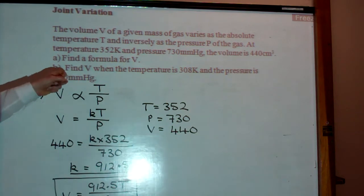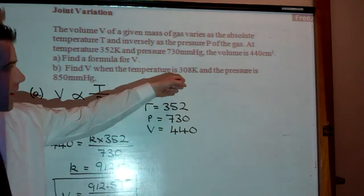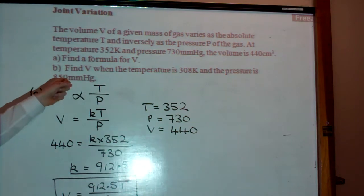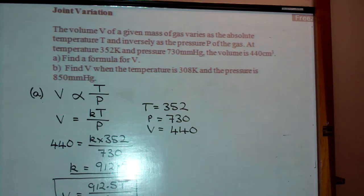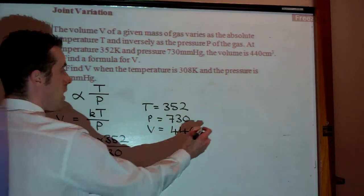Now, next it says part B, find V when the temperature is 308 Kelvin, so remember K for Kelvin, and the pressure is 850 millimetres of mercury. Remember HG from chemistry, that stands for mercury, that's a unit of pressure as well.